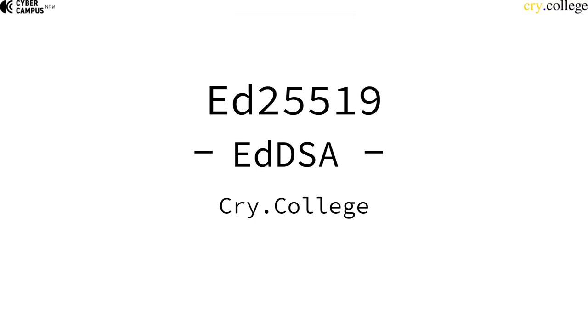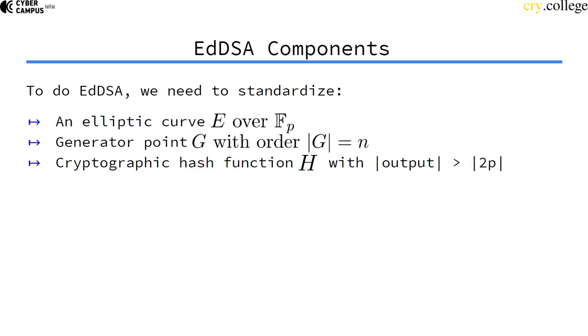So let's talk about the signature system EdDSA, which is quite similar to ECDSA. EdDSA needs an elliptic curve again, a generator point G with order n, and a cryptographic hash function. So far, so similar to ECDSA.